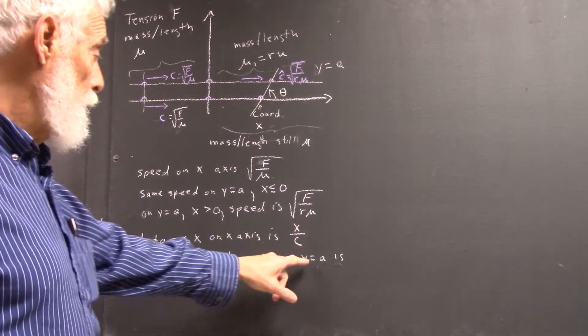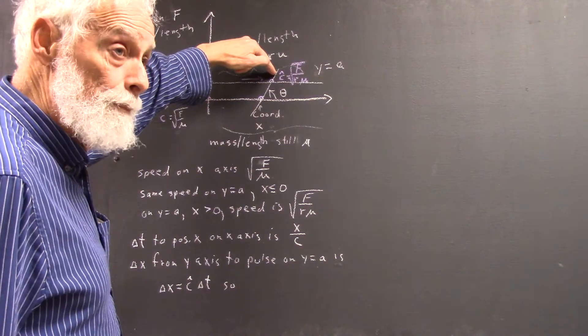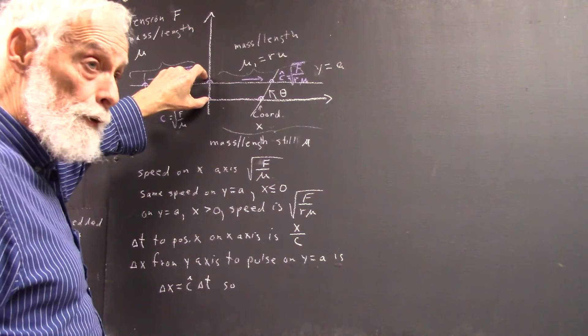And delta x on the y-axis to the point, to the pulse on y equals a, in other words, to this point, this point to this point. Well, they're at this point together, right?